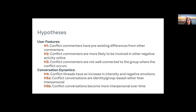We begin by formulating a few different hypotheses that relate to either user features or the conversation dynamics. For the user features, we hypothesize that conflict commenters have pre-existing differences from other commenters, are more likely to be involved in other negative activity online, and are not well connected to the group where the conflict actually occurs. For the conversation itself, we hypothesize that conflict conversations have an increase in intensity and negative emotions, are more group identity based, but become more interpersonal over time.